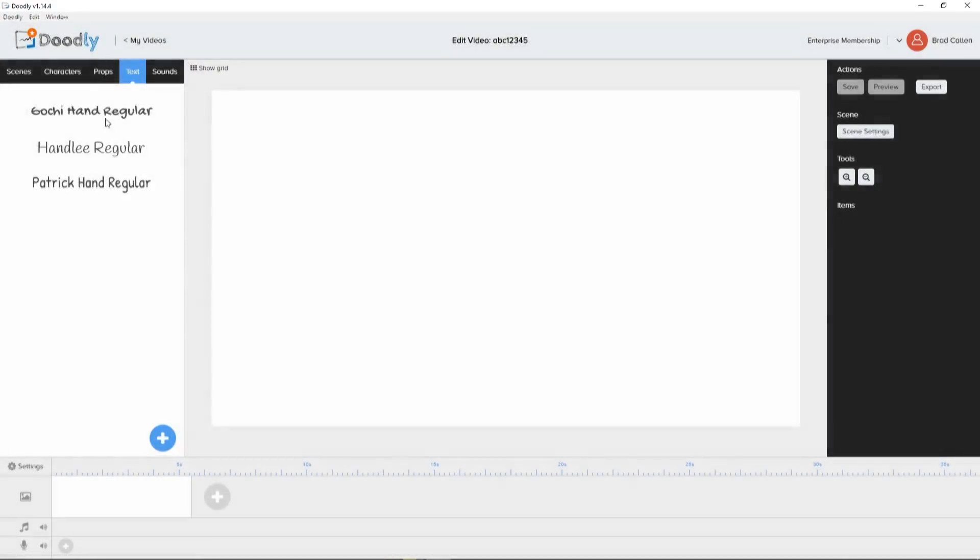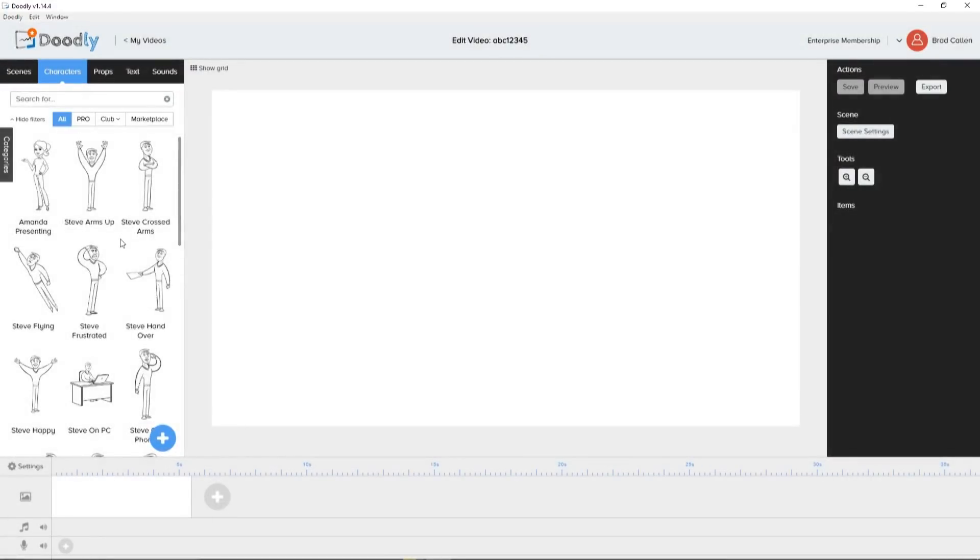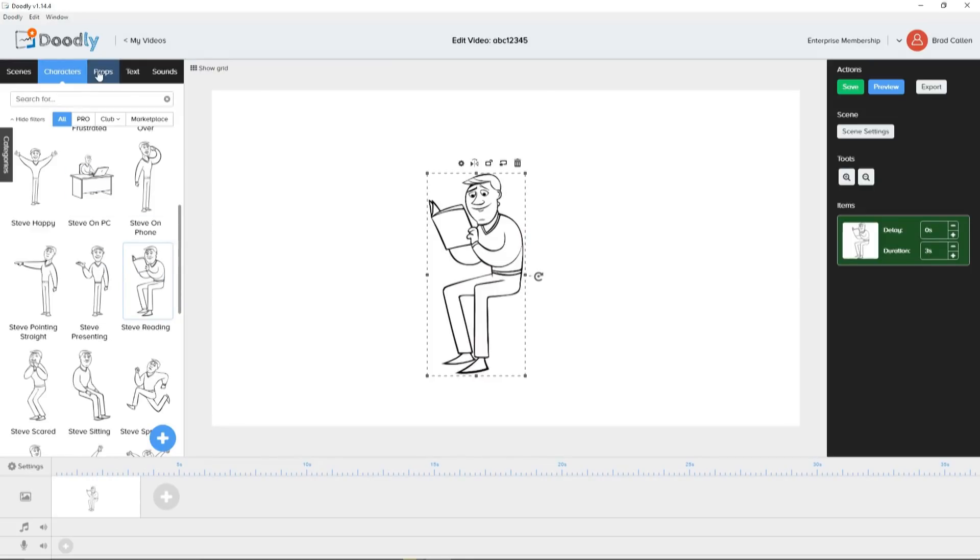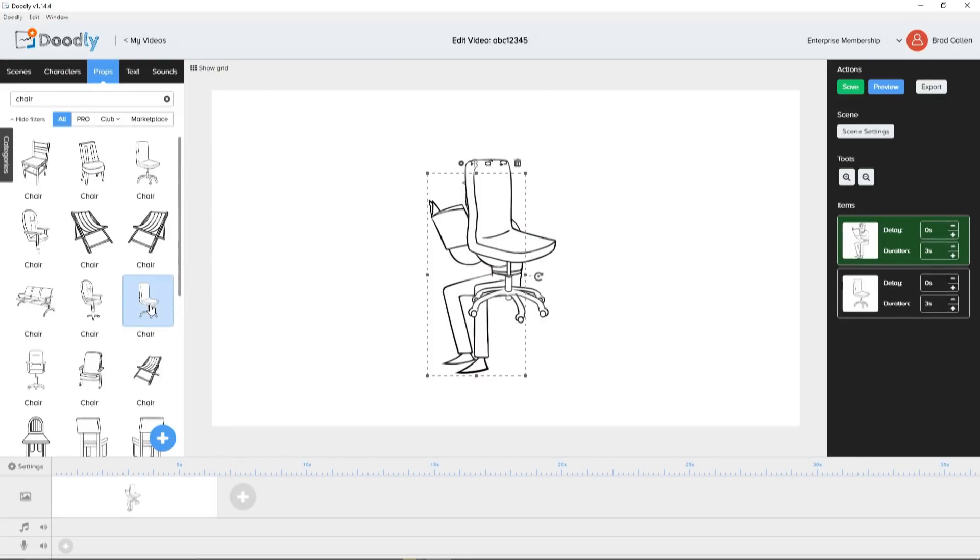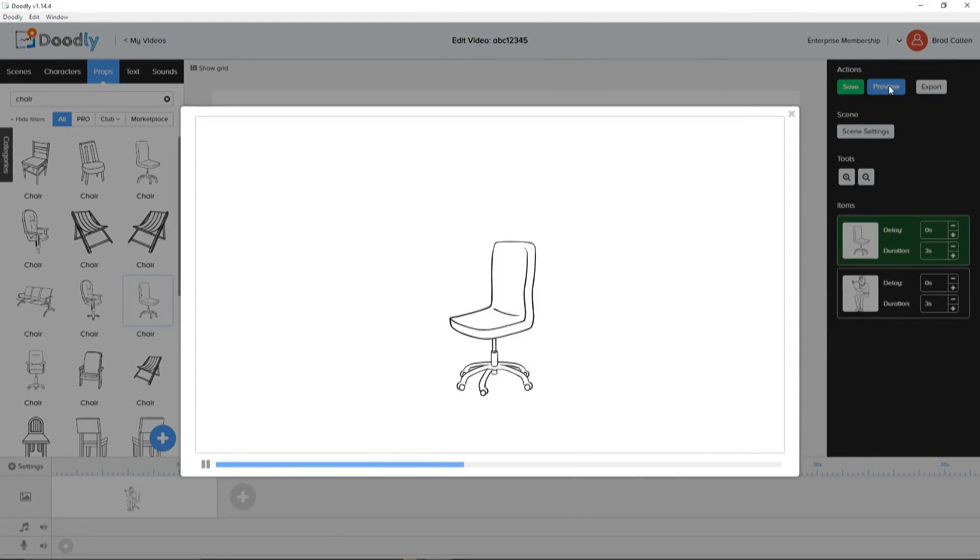And yes, you can upload your own images, props, fonts, and music. Now, to create your own doodle video, it's really simple. First, we pick an image. Then we grab a prop. We put it together, resize it, layer it. And voila! We have Steve reading his book on his chair.